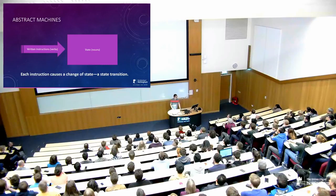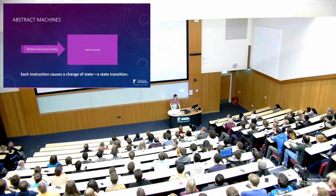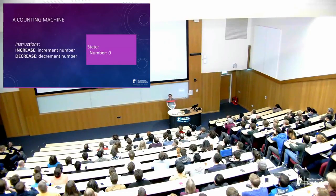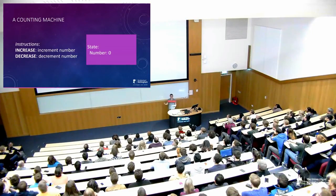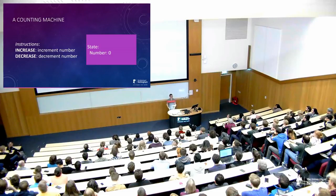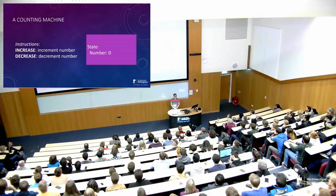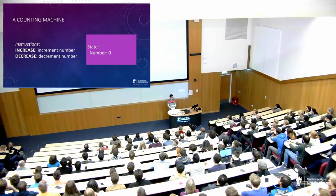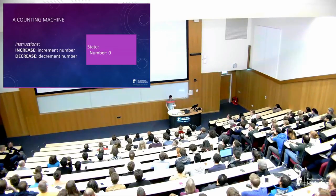I want to construct an example of an abstract machine that's relatively simple, kind of brain-dead easy. One type of machine might be just a machine that counts. Here the state is just a number — you might think of this as like one of those old mechanical clickers where every time you click the button the number increases. There are two instructions: one instruction to increase the number by one, and one instruction to decrease the number by one. Our verbs are to increase and decrease, and our noun is that number being incremented and decremented.